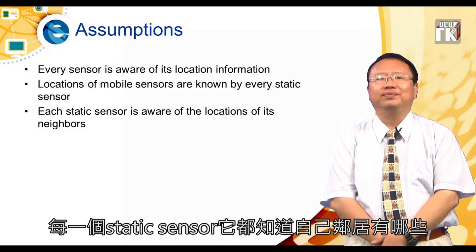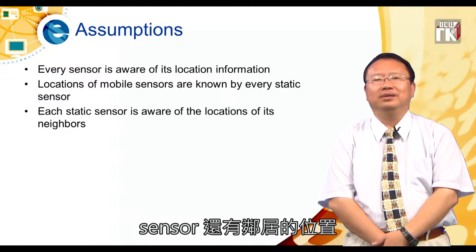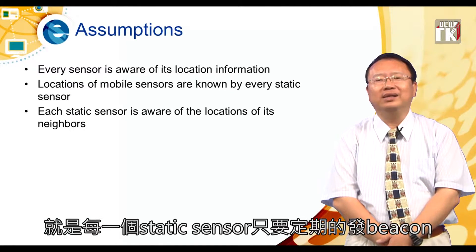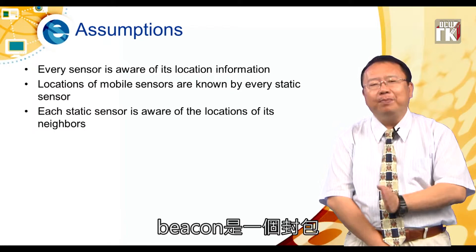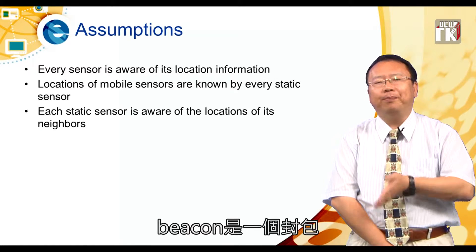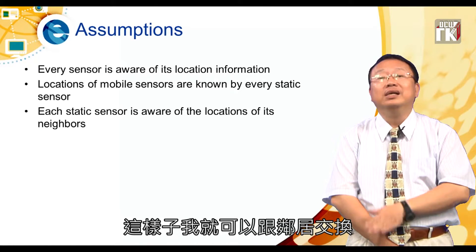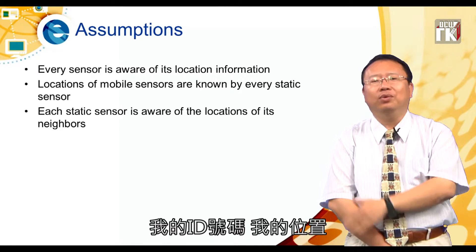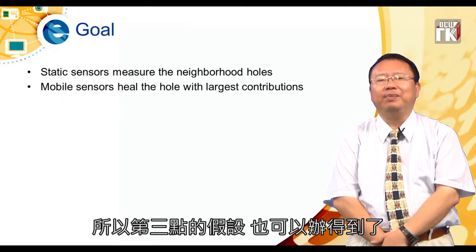第三个假设是每一个Static Sensor都知道自己邻居有哪些Sensor以及邻居的位置。这也很容易办到，就是每一个Static Sensor只要定期发送Beacon，Beacon是一个封包，带有讯号表示自己的位置，这样就可以跟邻居交换ID和位置。所以第三点的假设也可以办得到。